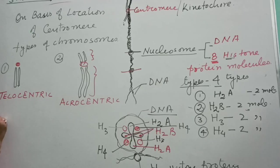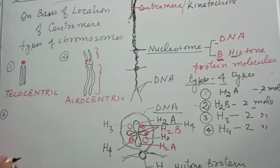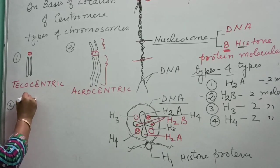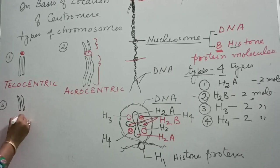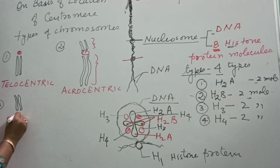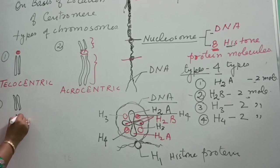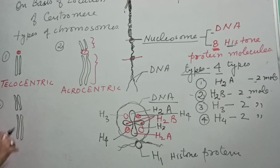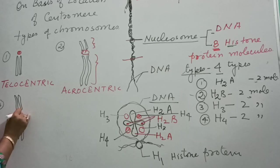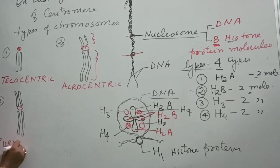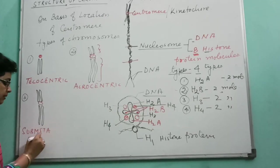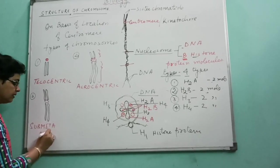Then followed by number three, the centromere is located in this way. Then one arm is a little bit smaller than the second one. That means there is not too much difference in the length of these two arms. And this is centromere. Then it is termed as sub-metacentric.